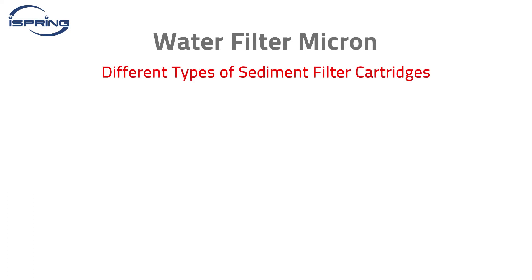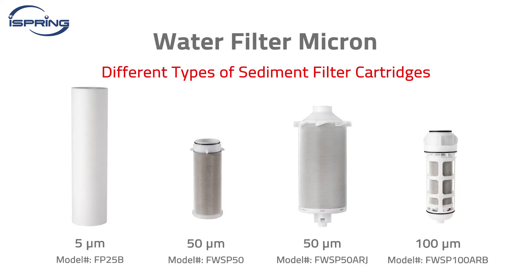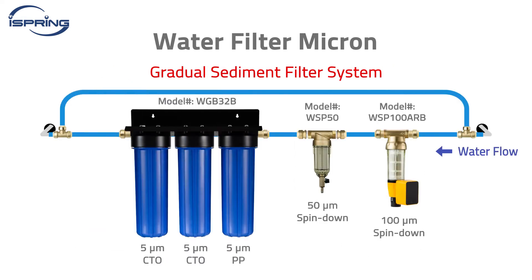A typical whole house water sediment filter can range from 5 to 100 microns, depending on the water quality. A gradual sediment filter system may be needed to prevent filter clogs if you have excessive particulates in the water.